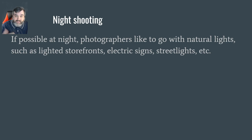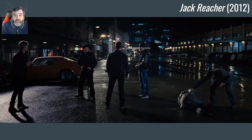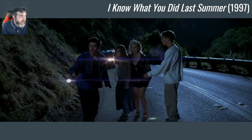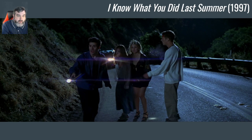Night shooting: if possible at night, filmmakers like to use natural lights such as light from storefronts, electric signs, and street lights. Here's a scene from Jack Reacher 2012 starring Tom Cruise — you can see the street lights and even the reflections in the water, giving you the feeling that you're really there. In I Know What You Did Last Summer 1997, these are natural-looking shots, but lights were used off camera. It's supposed to be a night shot because of the darkness at the top of the frame, the flashlight, and the car light — but this is probably not just natural lighting. That moon is very, very bright.